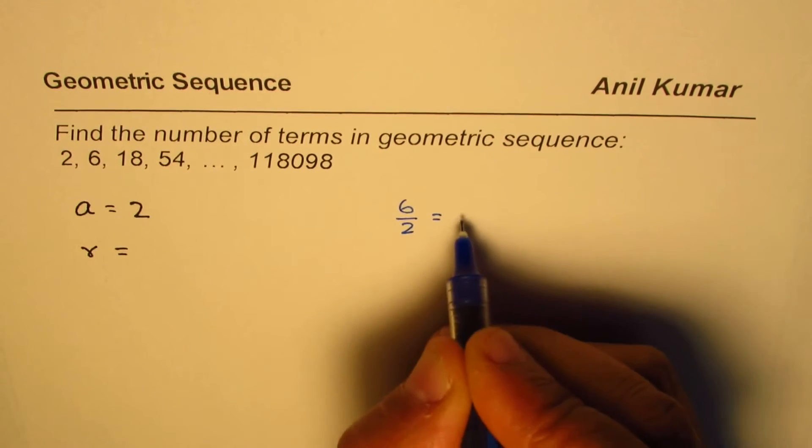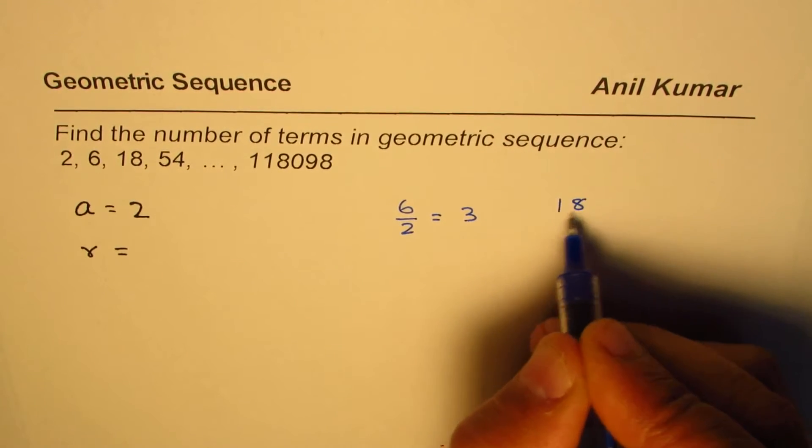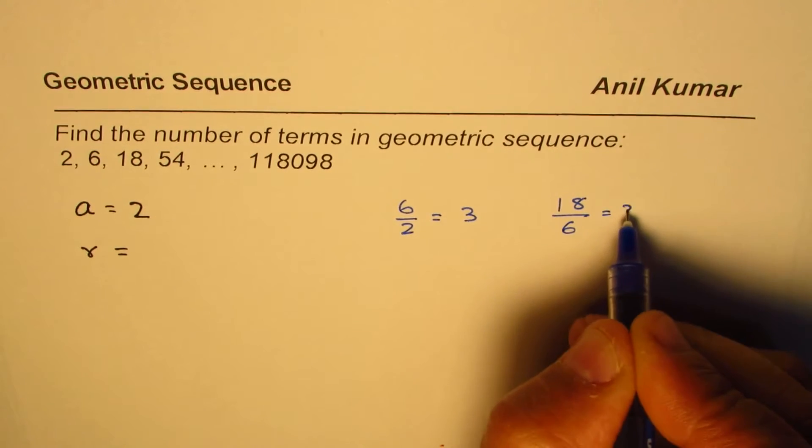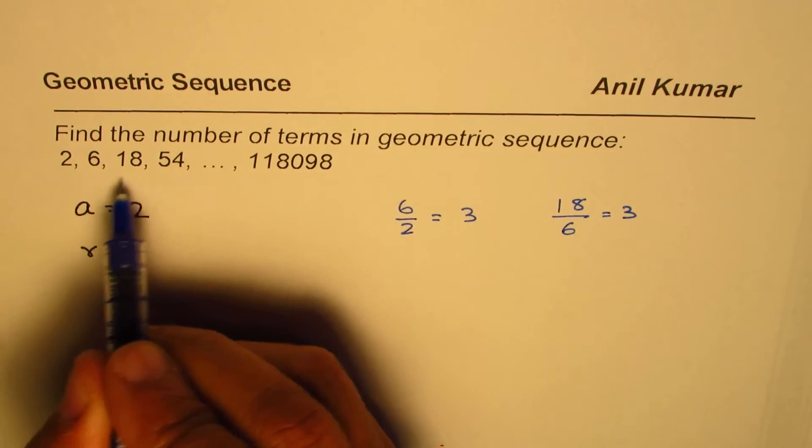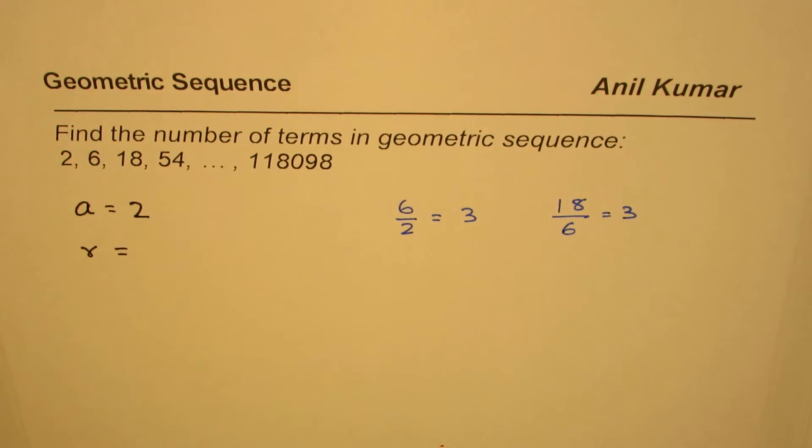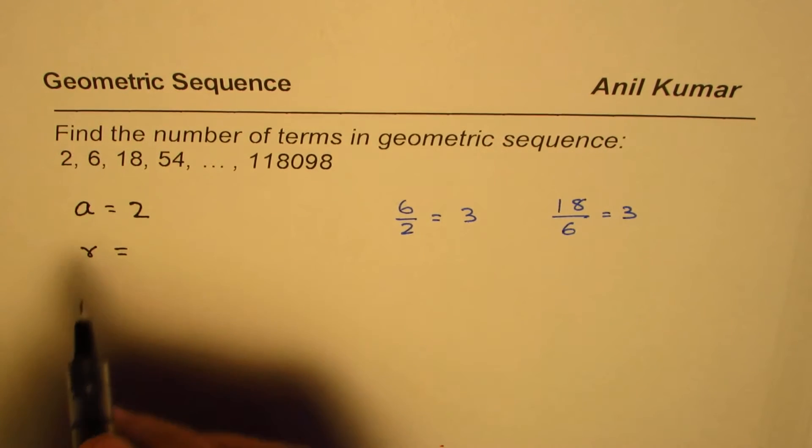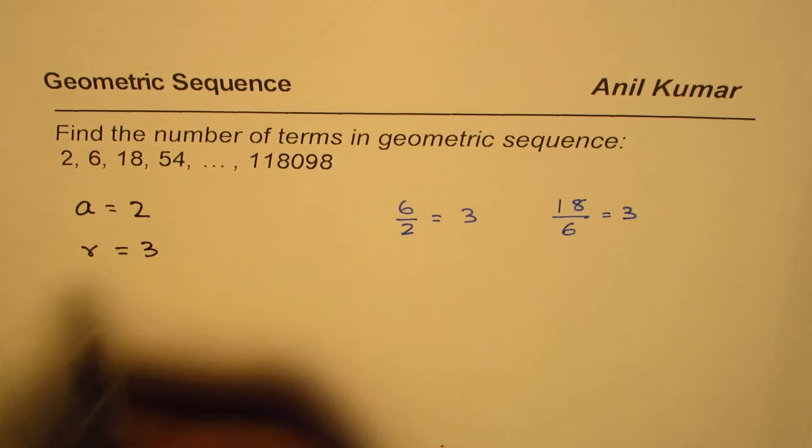And then we can do 18 divided by 6 which is also 3. Similarly as we move on we find that each successive number is being multiplied by 3, so r is 3.